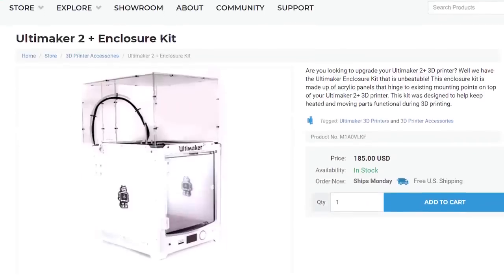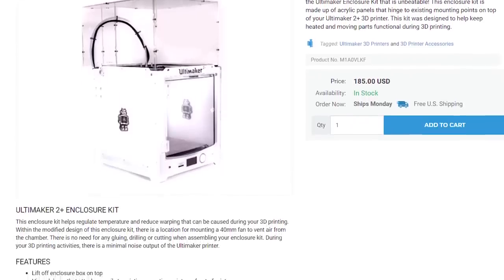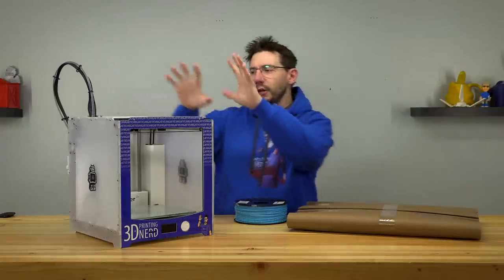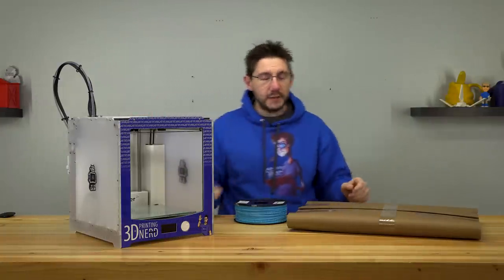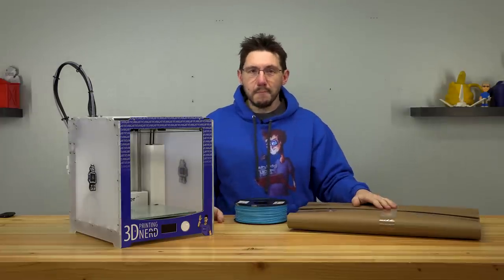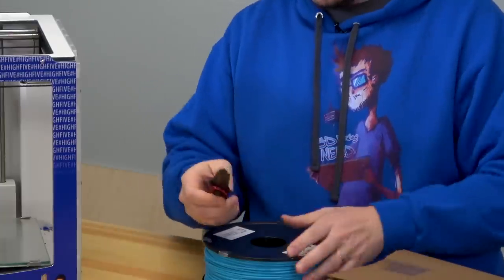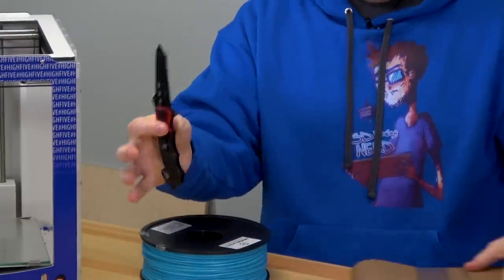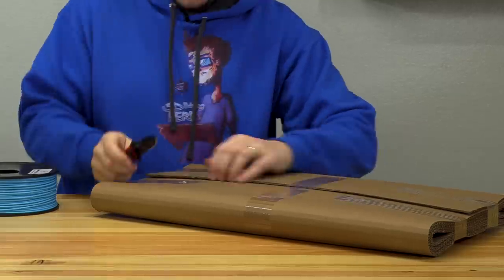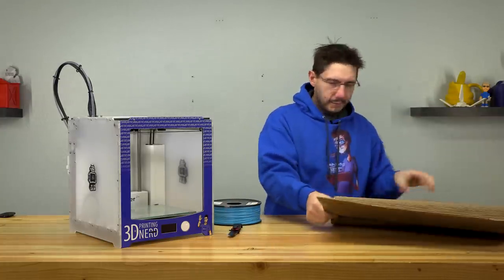Which means I have this to show you. This is an acrylic enclosure for the Ultimaker 2 Plus. It's manufactured by Printed Solid and sold by Matter Hackers. Let's get out the knife of truth and be careful, because that's a heck of a blade right there. This is gonna be fun to unwrap, maybe.